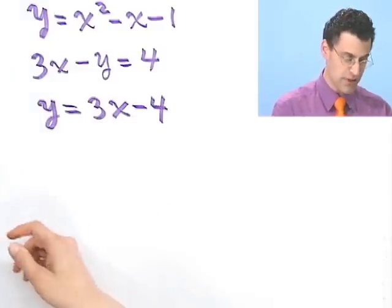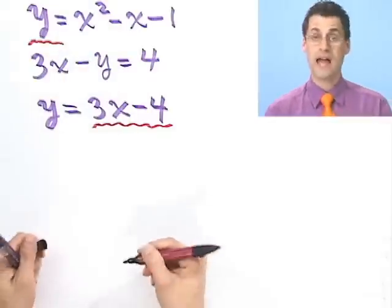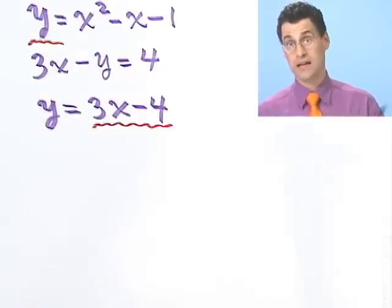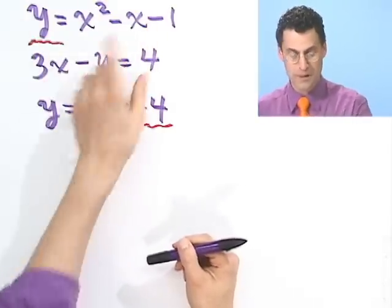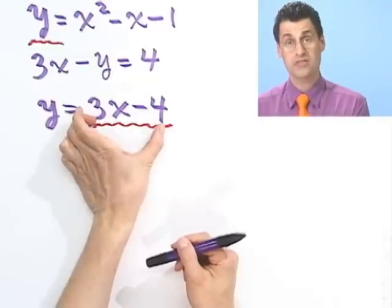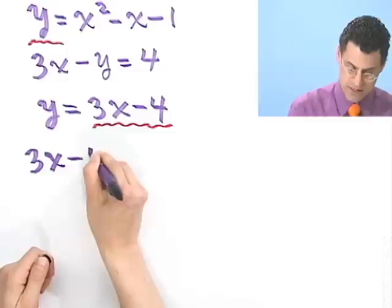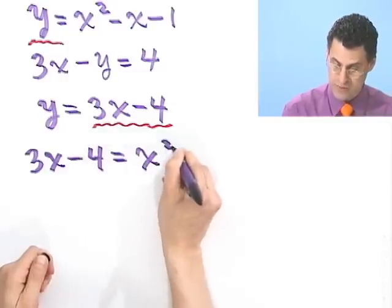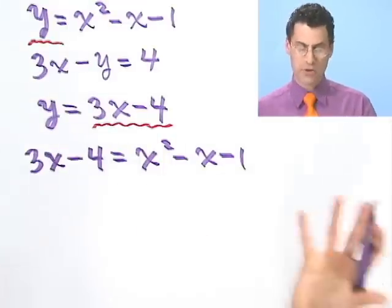But now I can insert that value of y right into here. And then I'll just have x's, and it'll be a quadratic, and I can factor and solve and go on with my life. So let's see how that would look. So instead of, I'm going to write this equation here. But instead of a y, I'm going to put down its twin. Its x twin, which is a 3x minus 4 equals x squared minus x minus 1. Great! Now it's just a quadratic in x.